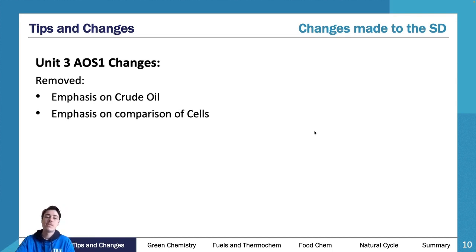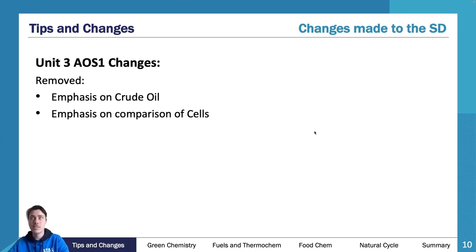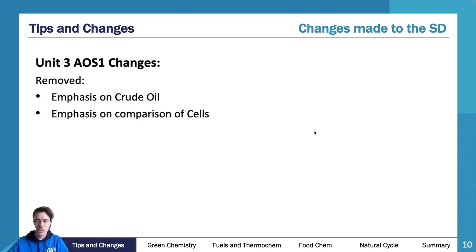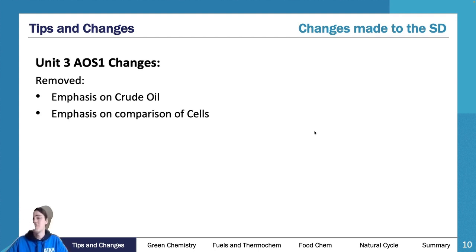They've also removed the emphasis on the comparison of cells. In the old study design there were about four dot points in a row comparing this cell with that cell, over and over. Those are all being removed. Now, it doesn't mean comparison questions are being removed — they love a comparison question — but the emphasis on comparison of cells specifically has been removed.